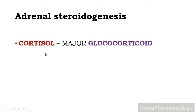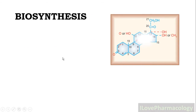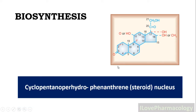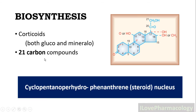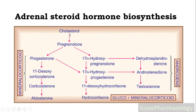One has to remember that the major glucocorticoid released is hydrocortisone, also called cortisol, whereas the major mineralocorticoid released is aldosterone. Before going to the biosynthesis, corticosteroids are made up of the cyclopentanoperhydrophenanthrene steroid nucleus, containing 21 carbon compounds. When we say corticoids, we are talking about both glucocorticoids and mineralocorticoids.